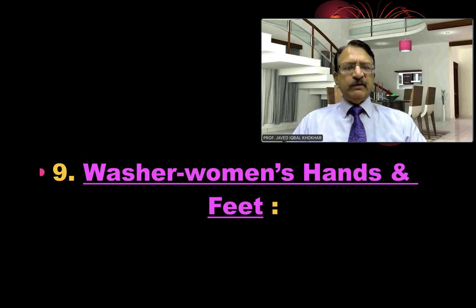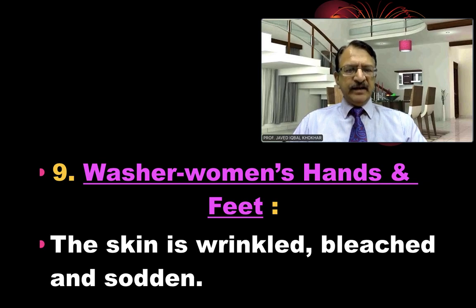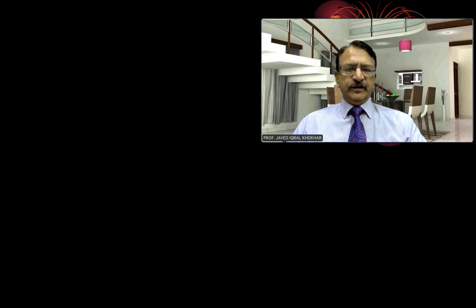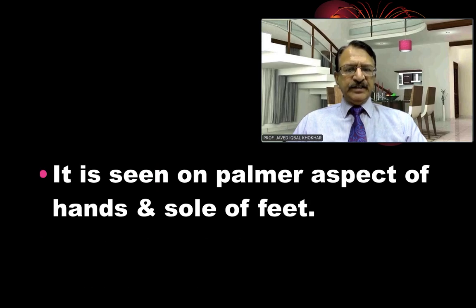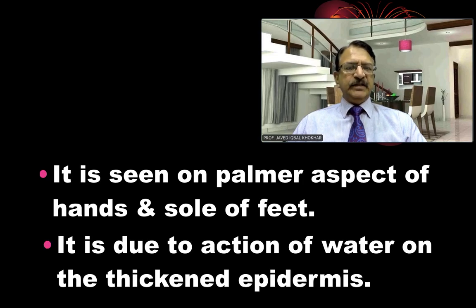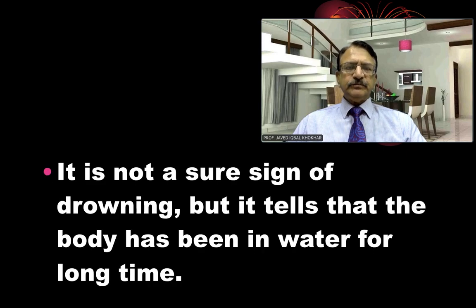Then there is the washerwoman's hands and feet — they are sodden and the skin is wrinkled, bleached, and sodden because of prolonged immersion in water. It is seen on the palm and dorsum of the hand and the sole of the feet, and is due to the action of water on the thickened epidermis. This is not a sure sign of drowning but only tells that the body has been in water for a long time. This is how the sodden skin appears.